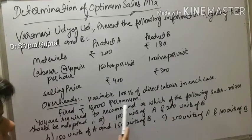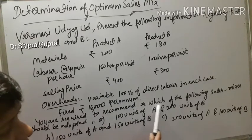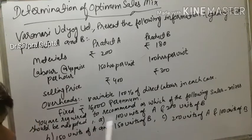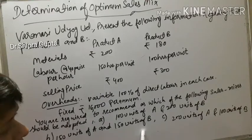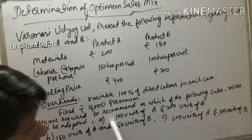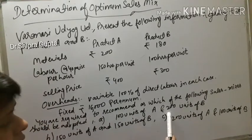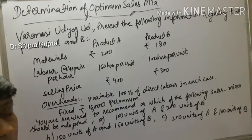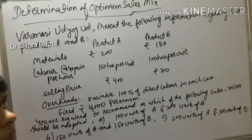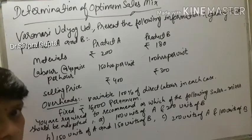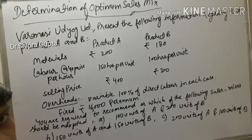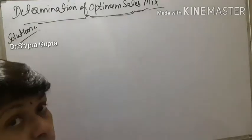Fixed overhead is Rs. 16,000 per annum. We are required to recommend which of the following sales mix should be adopted. Case 1: 100 units of A and 200 units of B. Case 2: 150 units of A and 150 units of B. Case 3: 200 units of A and 100 units of B. All three mixes total 300 units, but each will yield different profitability, so we calculate contribution and net profit for each.